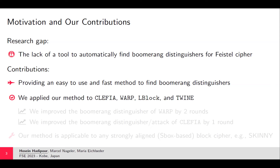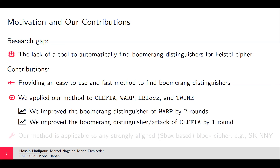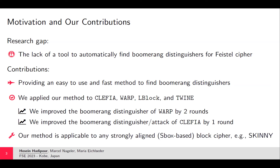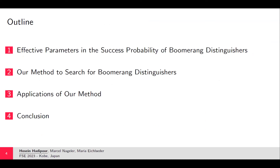Among the key results, we improved the boomerang distinguishers for WARP by two rounds and improved the boomerang distinguisher and boomerang attack on CLEFIA by one round. Our method is not limited to Feistel ciphers — it is essentially applicable to any strongly aligned S-box cipher, such as SKINNY and AES.